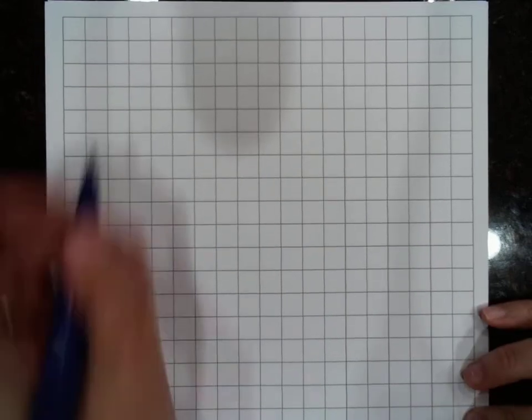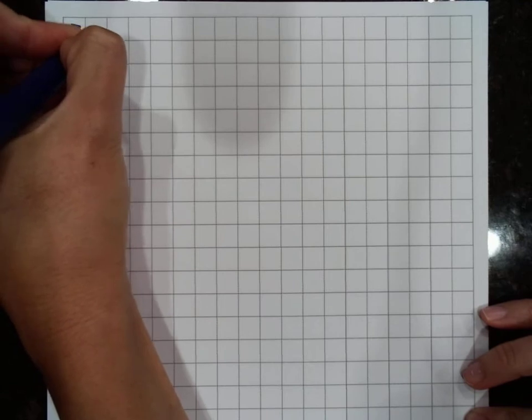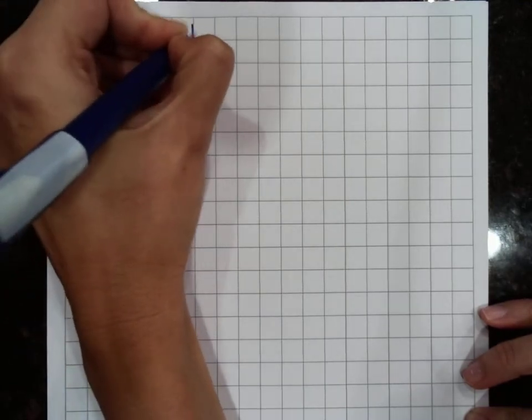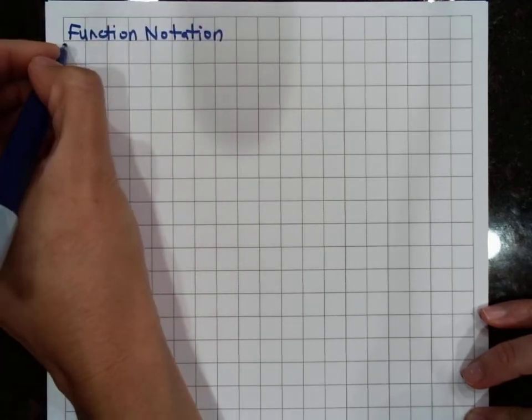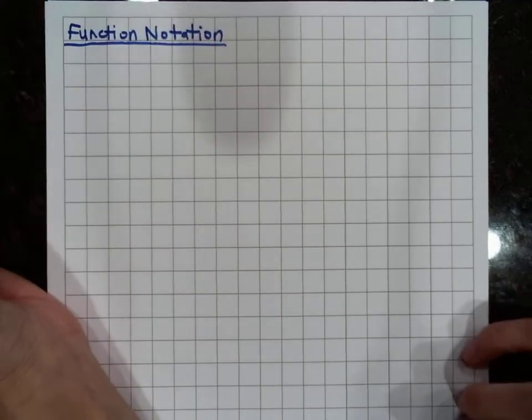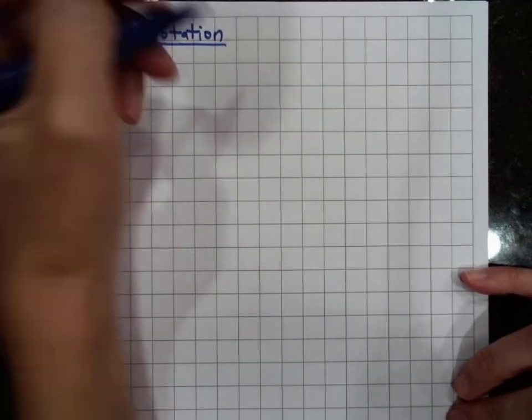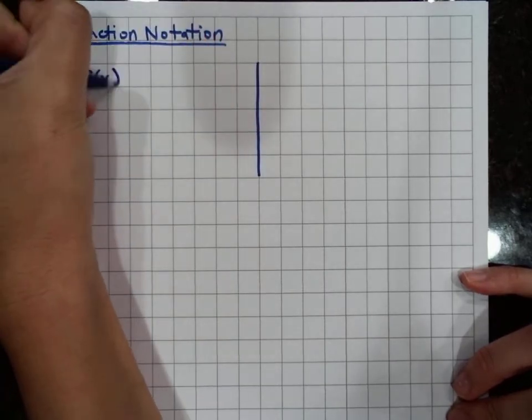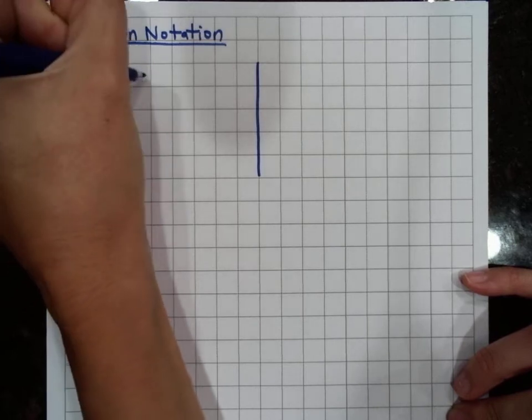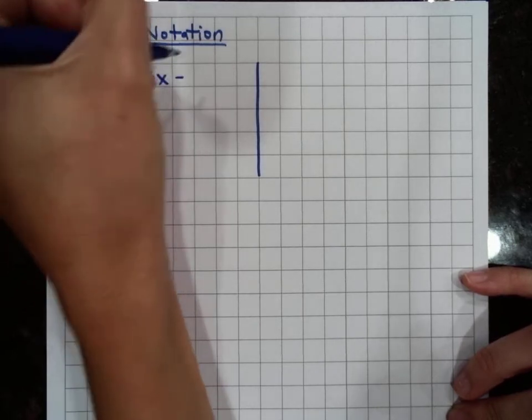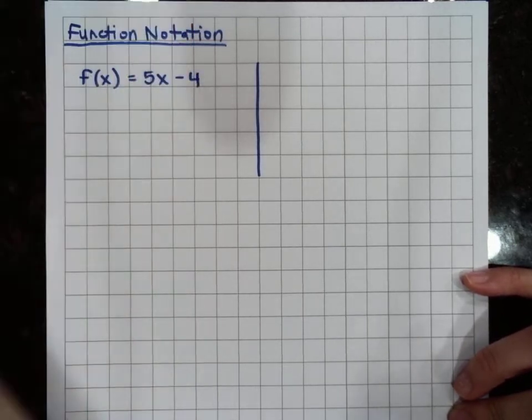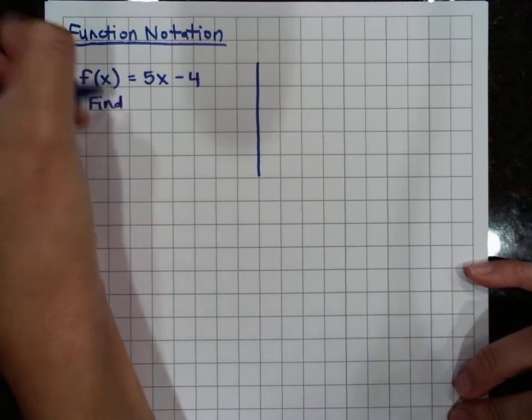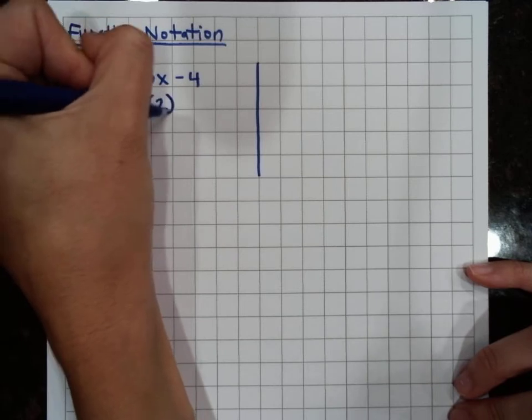Today we are going to talk about function notation. So for function notation, we'll see something like f of x equals 5x minus 4. And then it'll say find f of 2.